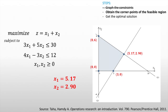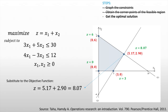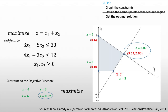We now proceed to the last step: substitute all corner point values into the objective function. For (0, 0), z equals 0. For (0, 6), z equals 6. For (3, 0), z equals 3. For our fourth corner point (5.17, 2.90), z equals 5.17 plus 2.90, which equals 8.07. Since the linear program is a maximization, we look for the greatest z value, which is 8.07. Therefore, the optimal solution is x1 equal to 5.17, x2 equal to 2.90, and objective function value equal to 8.07.